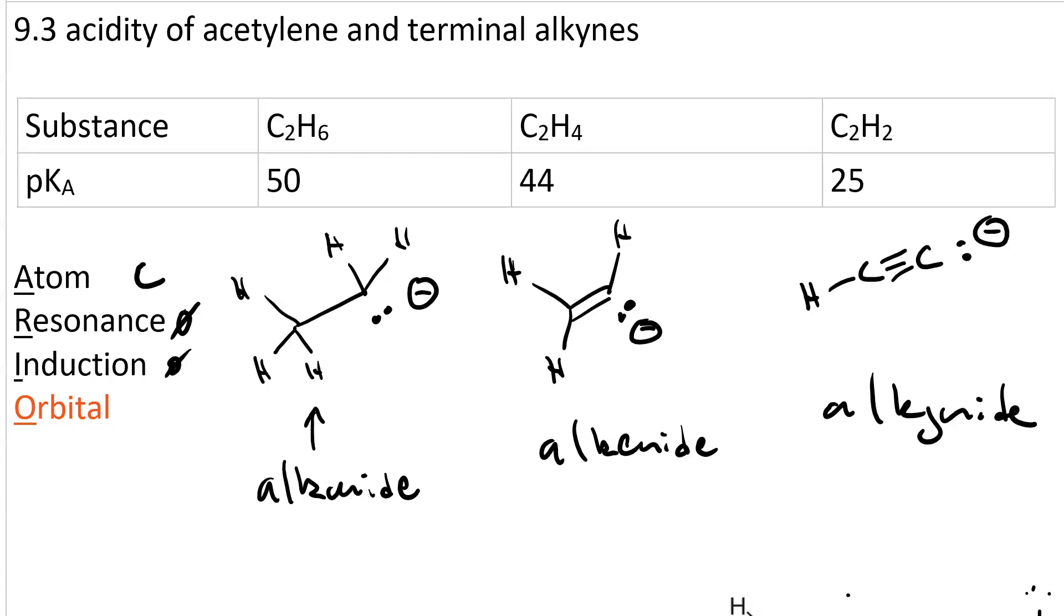So consider the hybridization. In the alkanide, the lone pair that gives you the negative charge is in an sp3 orbital. In an alkenide, it's sp2, and alkynide is sp.